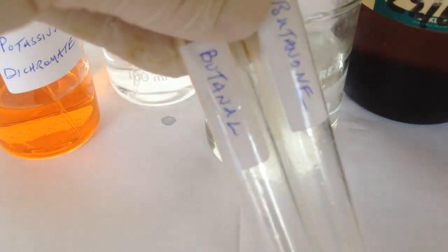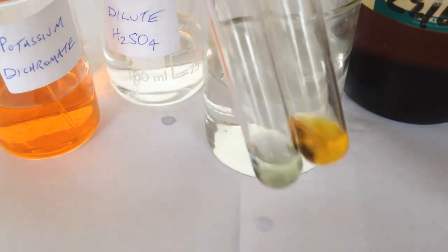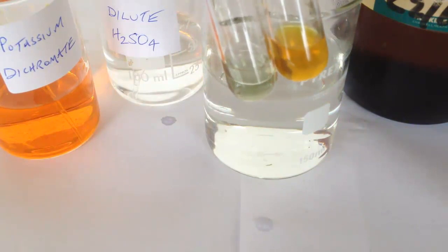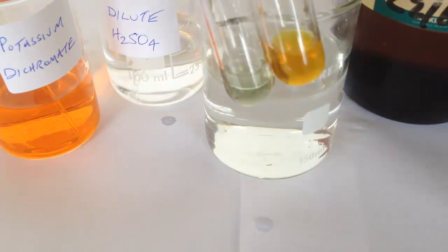So the aldehyde butanal has reduced potassium dichromate from an orange to green colour.